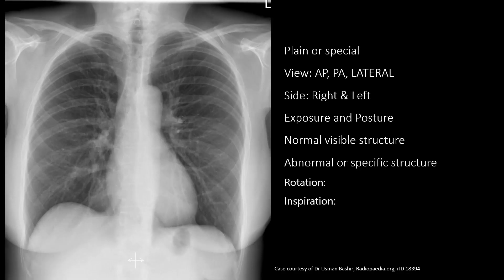The Department of Anatomy, Pre-U Government Medical College Rajput welcomes you to the radio imaging series. Today we will discuss chest x-ray. In any x-ray, these are the points we should look for: whether it is a plane or special view, side, exposure, posture, normal and abnormal visible structures, rotation, and inspiration. If any special technique is used, then it is a special x-ray.